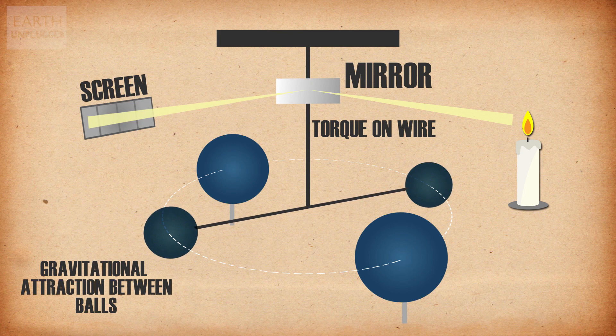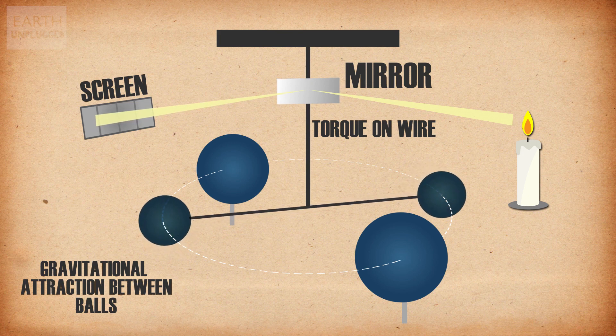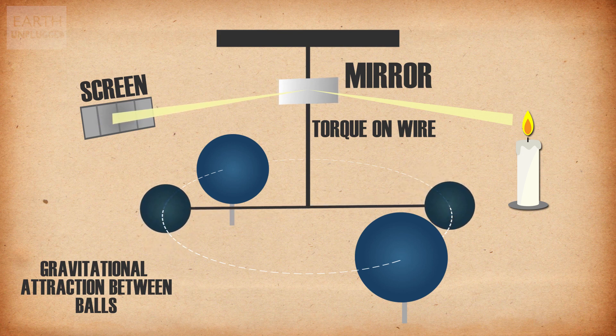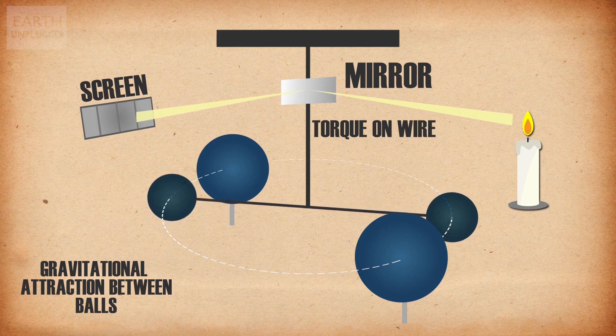Cavendish actively wanted to weigh the Earth, and to do this, he needed to work out its density. He came up with an experiment a little bit like this to measure the attractive forces between two objects, and as the balls move closer together, they shift the mirror which they are attached to, which then bounces light off in different directions which he can then measure.